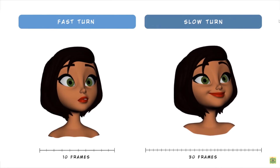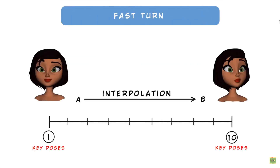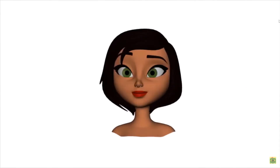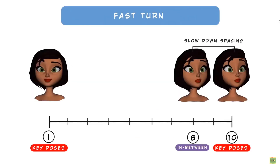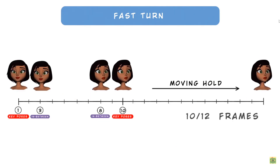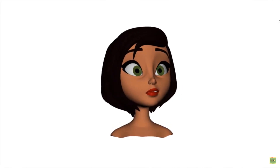Another thing we can manage during the turn is the spacing. When we create the first and last pose, the software creates a linear interpolation between these two poses. Let's put into practice another principle: slow in and slow out. If we slow down the spacing in the last part by creating an in-between close to the final pose, and do the same at the beginning, and also add a moving hold at the end so the movement doesn't freeze but continues to move just a little bit — just enough to be perceived by the human eye — and we can also add details like the overlap of the hair. As you can see, the result is much better and the character is more alive.